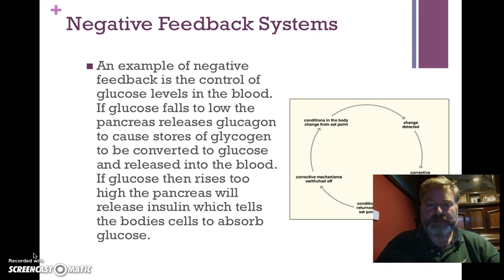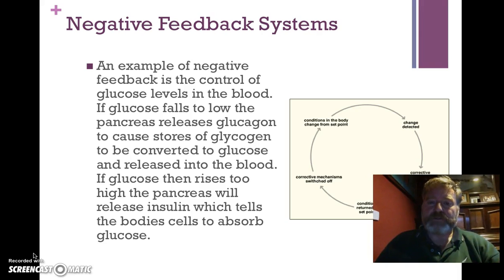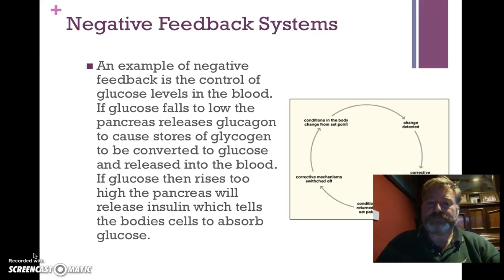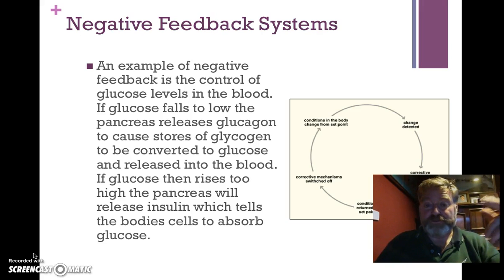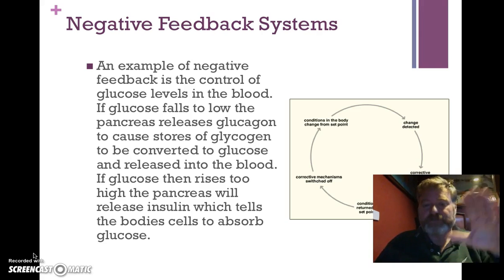The hypothalamus sends a message via nerve back to the pancreas, and in the islets of Langerhans in the beta cells, insulin is produced. Insulin enters the bloodstream and causes the liver, muscles, and other cells to take up glucose and make it into glycogen, so the glucose starts to fall. We've got an opposite reaction to the stimulus that caused it.